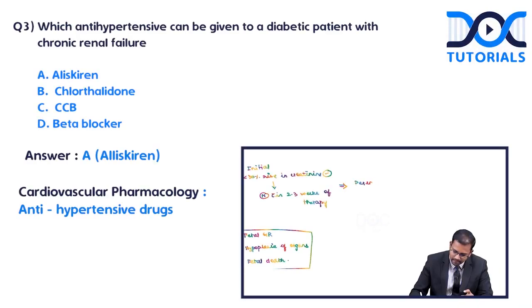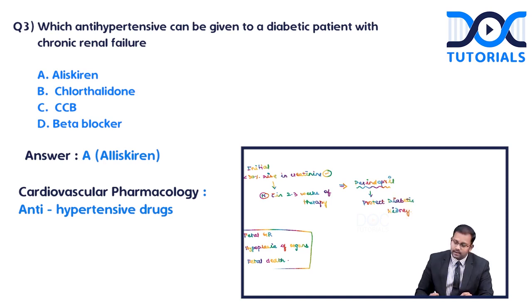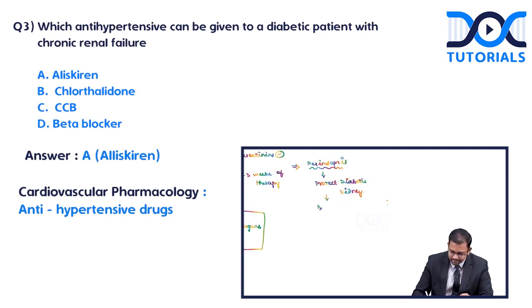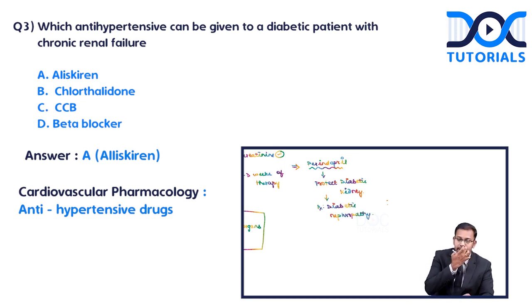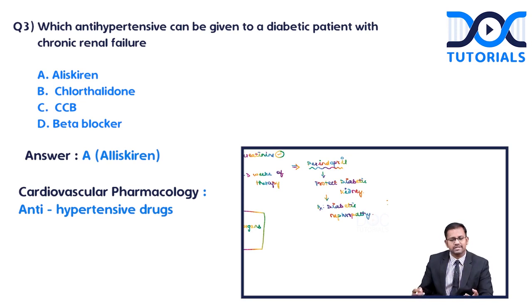Perindopril is one important ACE inhibitor. Perindopril tends to protect the diabetic kidney, which means it can be used for the treatment of diabetic nephropathy. The mechanism has not been fully established — many books mention certain mechanisms but all of these are hypotheses.